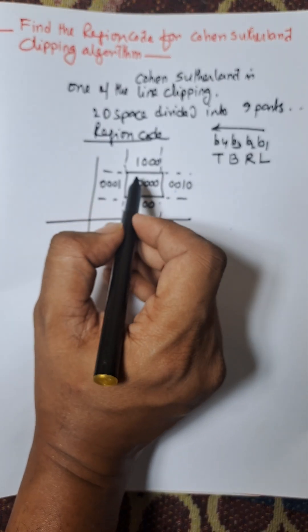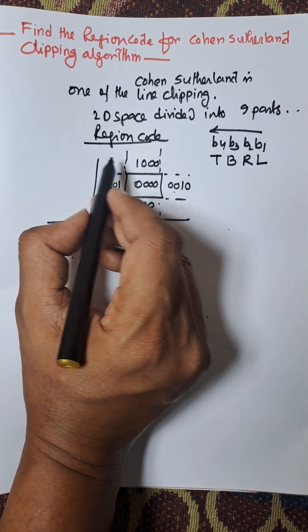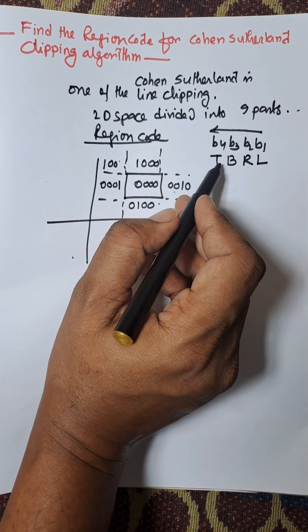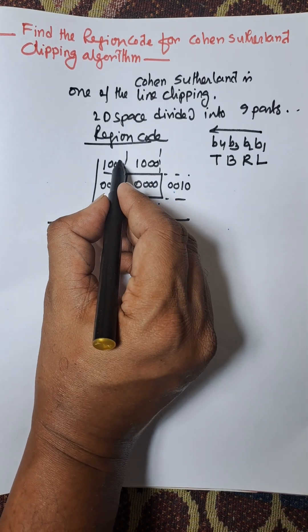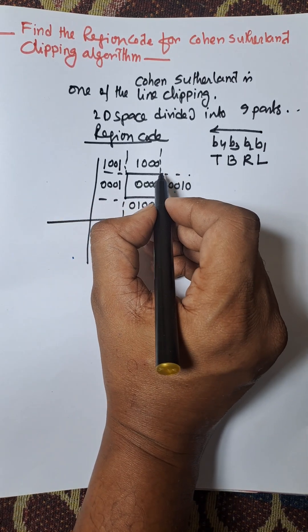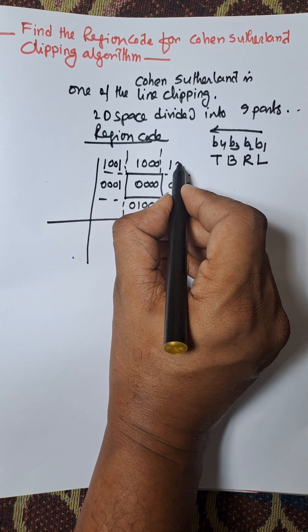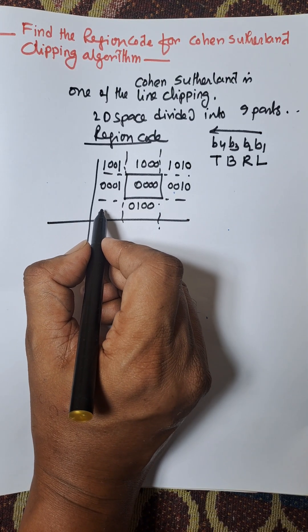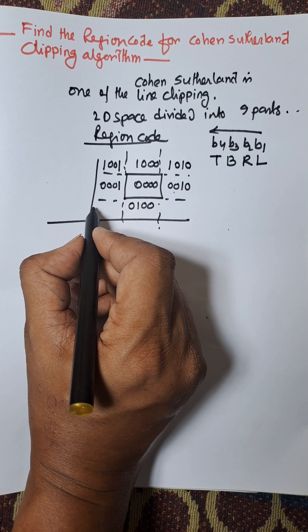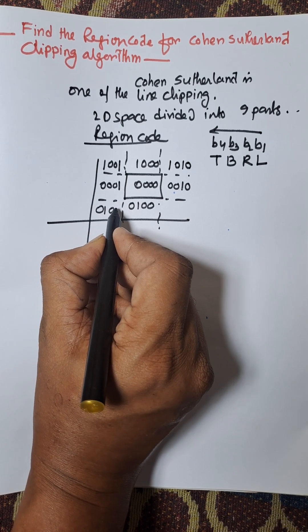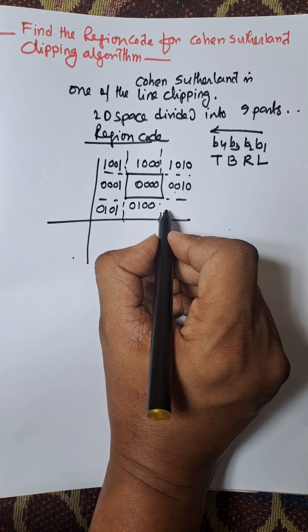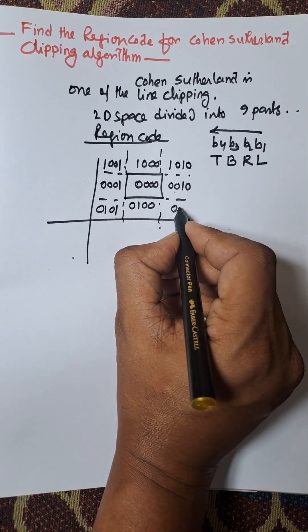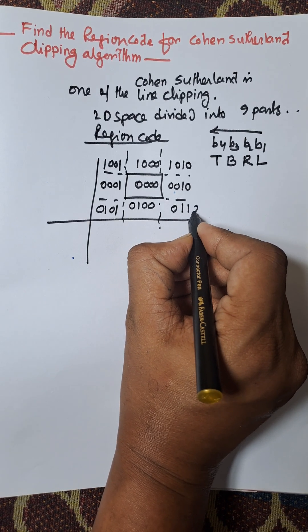This is the top and left side of the region — that is 1, 0, 0, 1. This is top and right side — that is 1, 0, 1, 0. This is bottom and left side — that is 0, 1, 0, 1. This is bottom and right side — that is 0, 1, 1, 0.